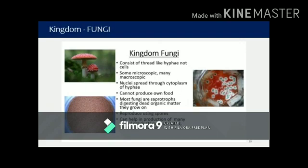The next kingdom is Fungi. Fungi consist of hyphae — all the cells come together and form a thread-like structure that helps derive nutrition from different sources. There are microscopic fungi as well as macroscopic ones like mushrooms which you can see with the naked eye. A nucleus is present. Fungi cannot produce their own food; they are saprophytic heterotrophs, meaning they feed on dead and decaying organic matter. They reproduce using spores, which are single cells meant for reproduction.